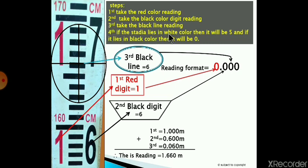If the stadia lies in white color, then it will be five. If it lies in the black color, then it will be zero. For example, you can see here the stadia lies on the black color, that's why we take it as zero.